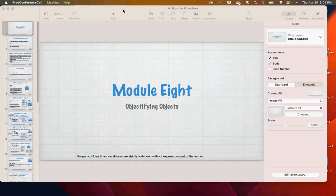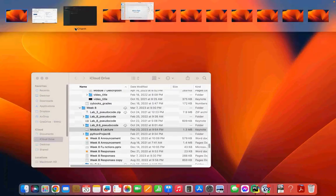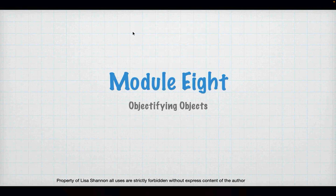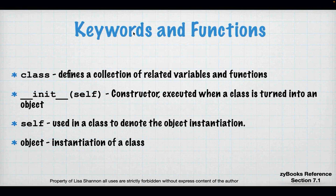Tonight we are talking about object-oriented programming. What is object-oriented programming? What we've done till now is we've had things like variables, functions, lists, and dictionaries. But it would be really nice if we could group functions, variables, lists, whatever, into a single entity and use that again and again and again.